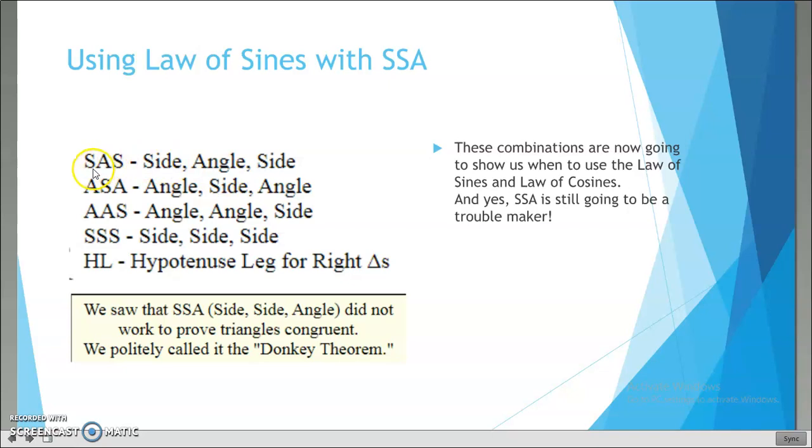These are the laws that we use: side angle side, angle side angle, angle angle side, side side side, and hypotenuse leg. These combinations show us when to use the law of sines and the law of cosines. SSA is still a troublemaker. Remember that SSA was not one of the things that we actually use.